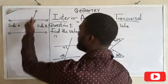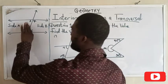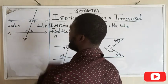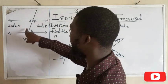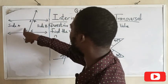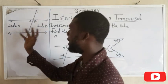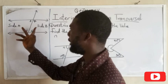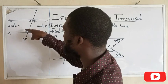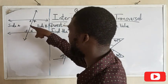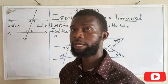If you notice, this transversal line has divided the angles into two parts. So we have side A and we have side B. These angles on side A—three and five—they are interior angles on a transversal because this transversal has succeeded in dividing this into two parts, side A and side B.